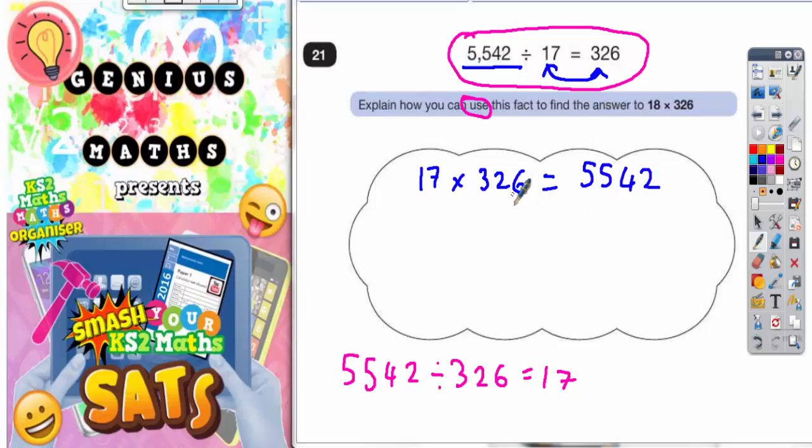So, if 17 lots of 326 is 5,542, 18 lots of 326 is going to be one extra lot of 326 on top of this. So, what we need to do is add on that extra lot of 326.